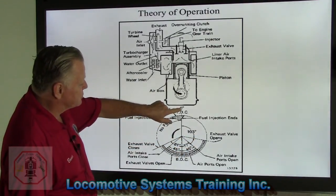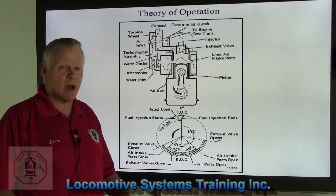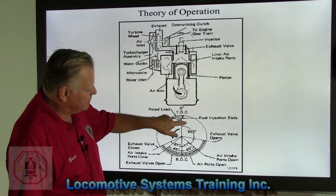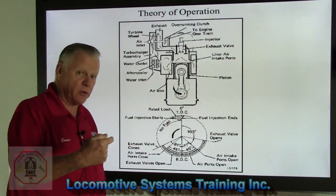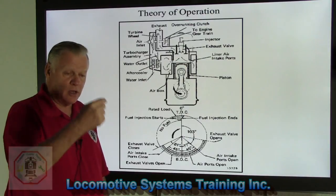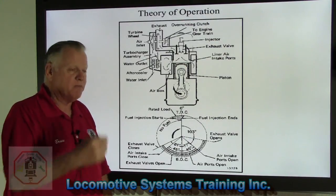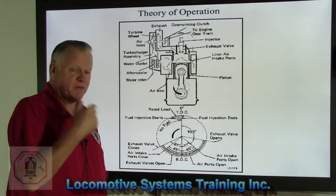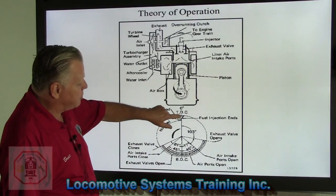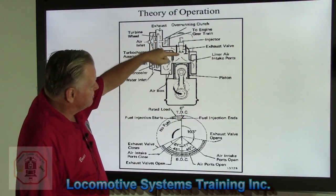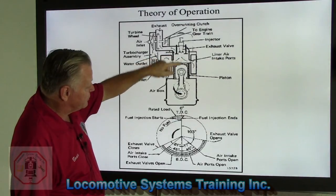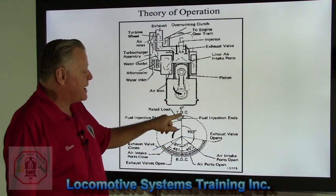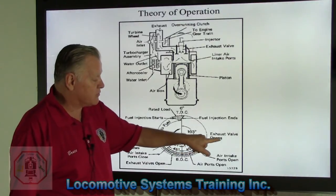We start at zero degrees, or TDC — top dead center. As the crankshaft begins to roll down from zero degrees, the flywheel has a pointer, and every 10 degrees is marked around all 360 degrees of the flywheel. At 103 degrees past top dead center, the exhaust valves will begin to open.